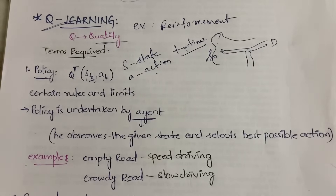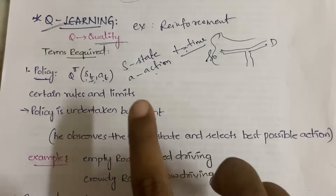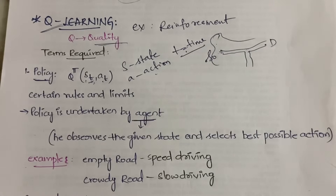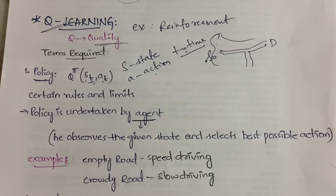This policy will be undertaken by the agent. The agent is the person — or machine, bot, or anything — who is performing the task and learning through the machine learning algorithm. The agent has to abide by the rules and regulations defined in the policy. The agent will observe the given state and select the possible action.